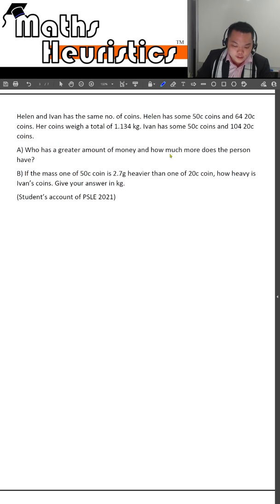Who had a greater amount of money and how much more does the person have? And for part B, if the mass of one 50 cent coin is 2.7 grams heavier than one 20 cent coin, how heavy are Ivan's coins? Give your answer in kg.